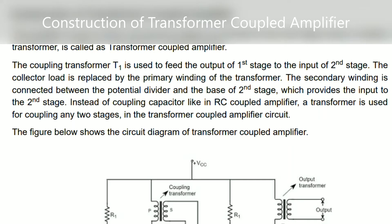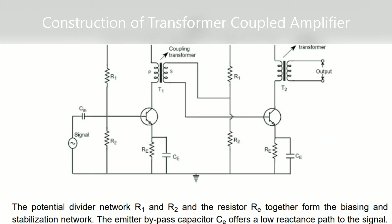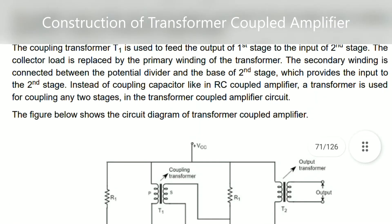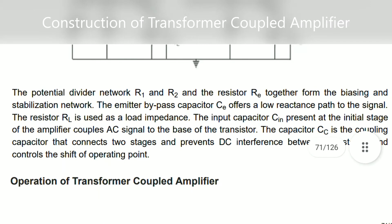The collector load is replaced by the primary winding of the transformer. The secondary winding is connected between the potential divider and the base of the second stage. The potential divider consists of resistors R1 and R2. Instead of a coupling capacitor as in RC coupling, we are using a coupling transformer here.